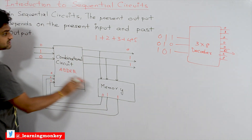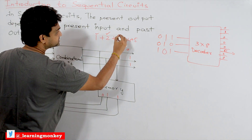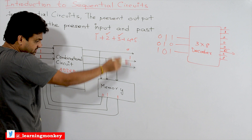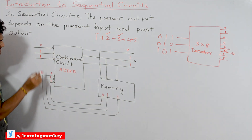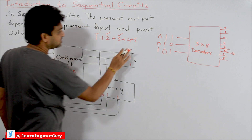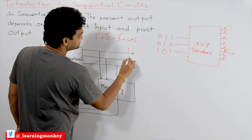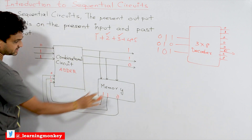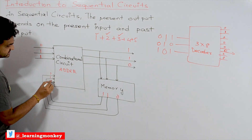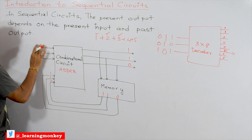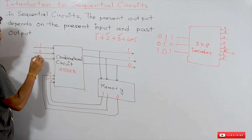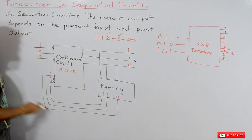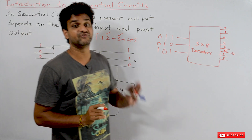Next we add 3. The present input is 3, and the past output stored is also 3, so 3 plus 3 gives 6, which in binary is 1-1-0. This 1-1-0 is stored in memory for the next calculation. Now the next number to add is 4, which is 1-0-0, and these two values get added to produce the next output.